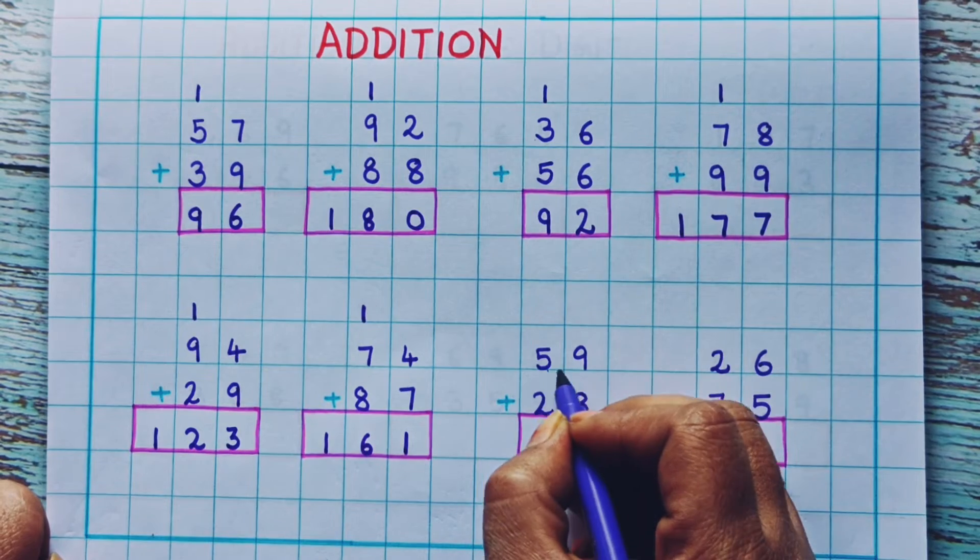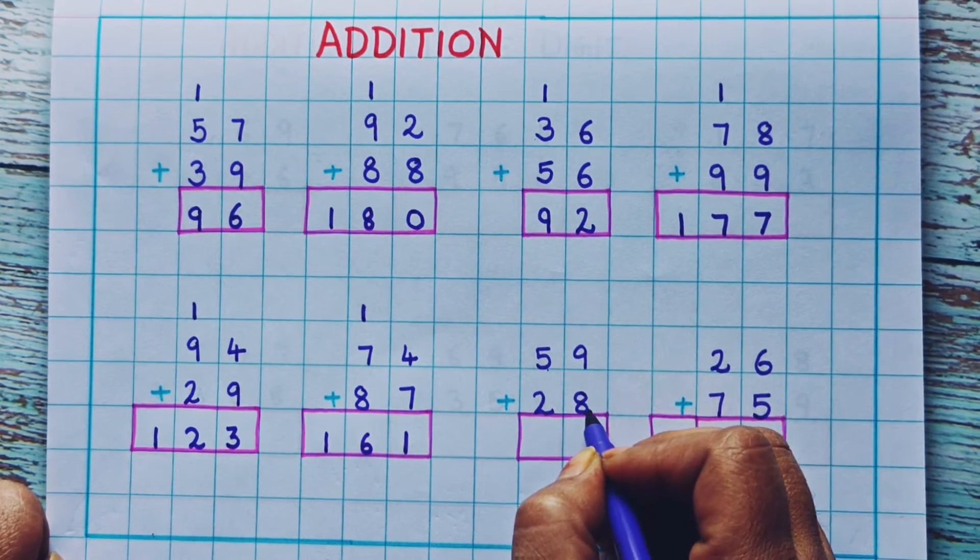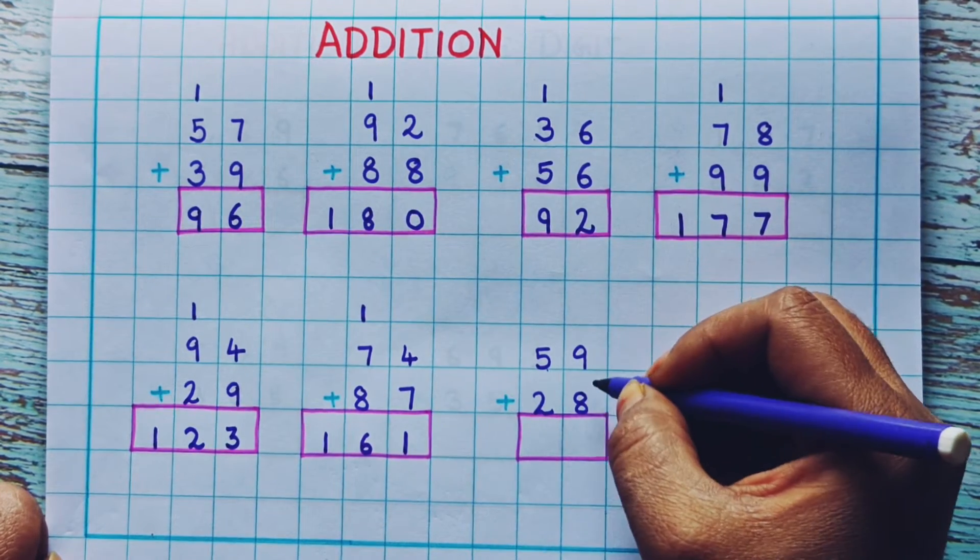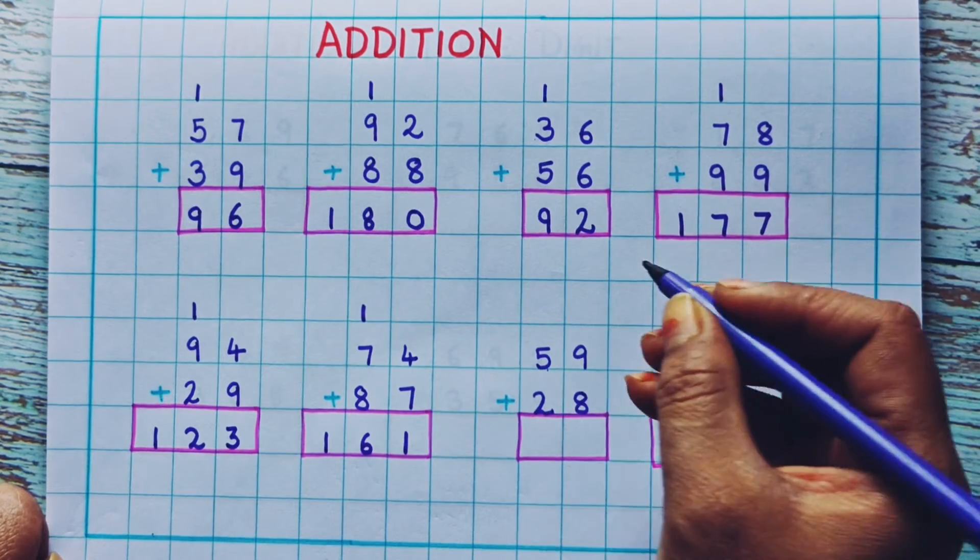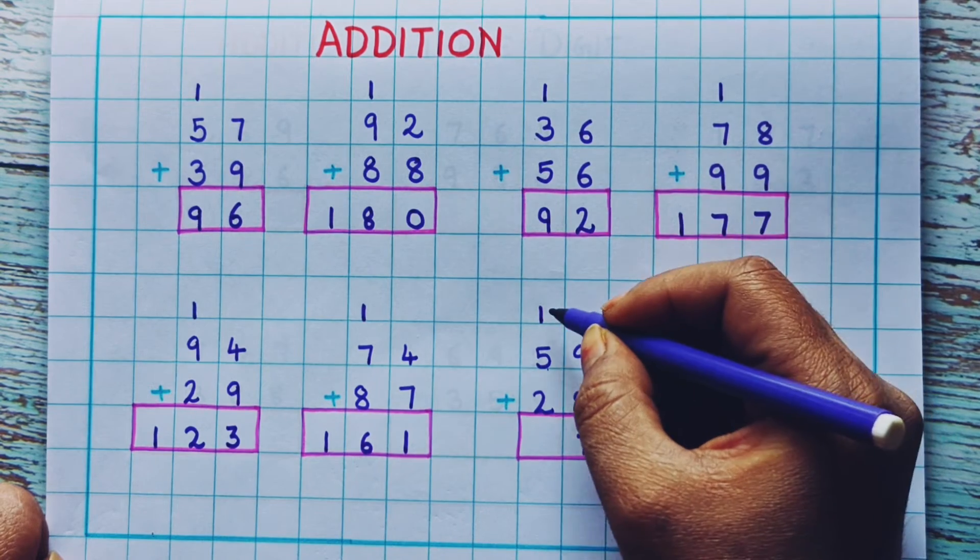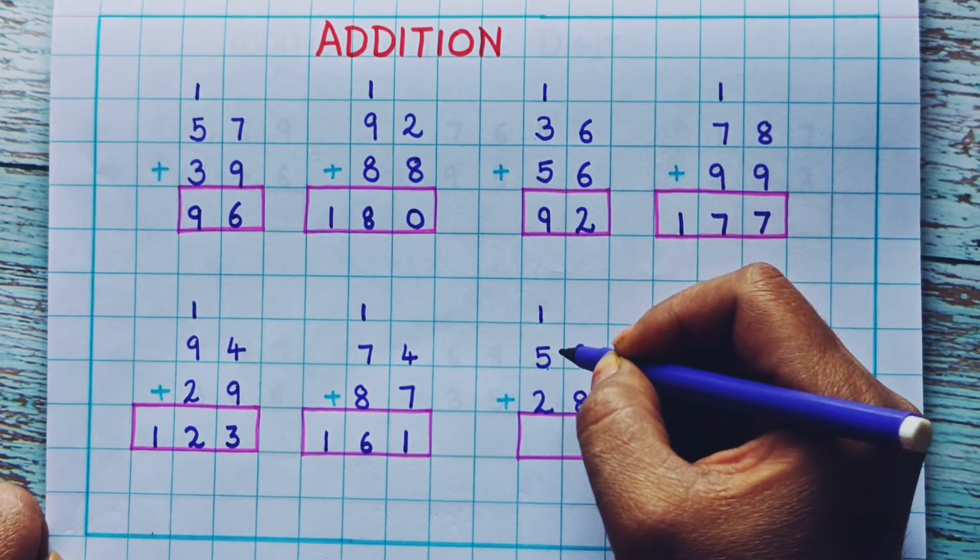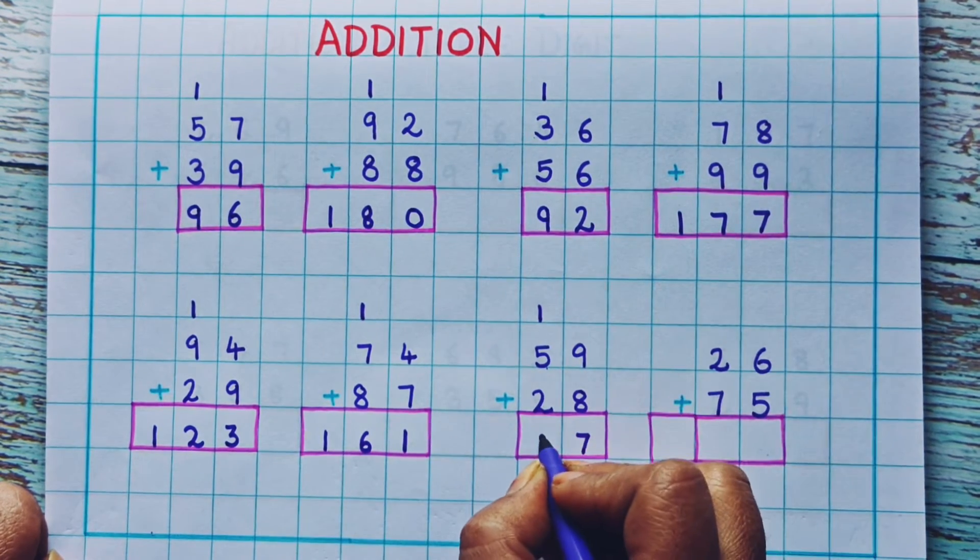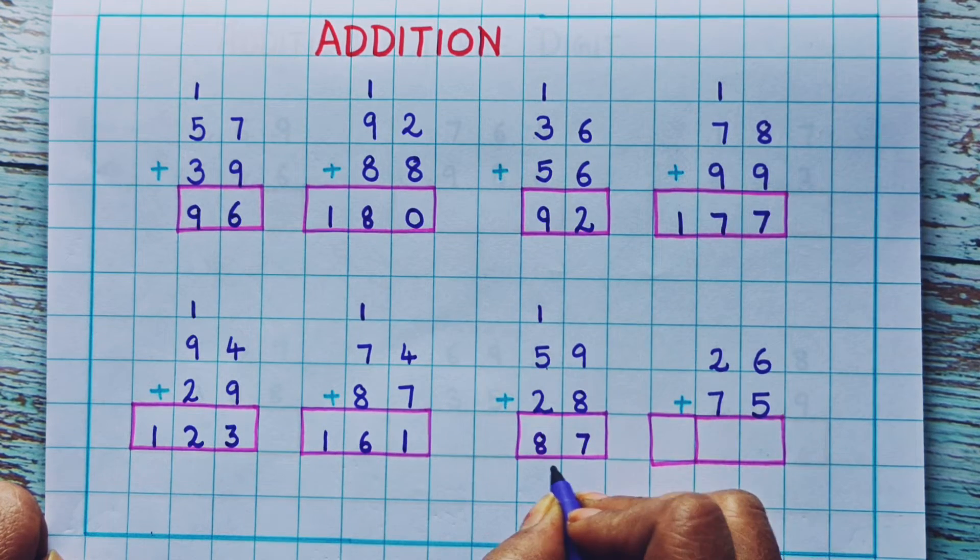Now 59 plus 28. How are we going to do it? 9 plus 8 is 17. 1 I will write here and 7 I will write here. So 1 plus 5 is 6. 6 plus 2 is 8. So the answer is 87.